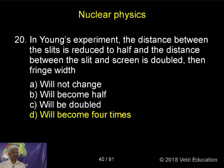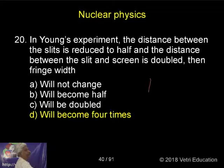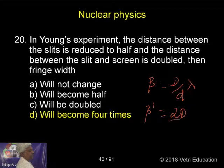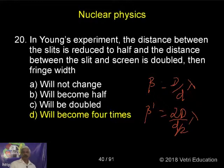Then it will become 4 times, because beta is equal to capital D divided by small d, multiplied by lambda. So the new beta equals 2D divided by (d/2), multiplied by lambda — these two factors give 4, resulting in 4 beta.